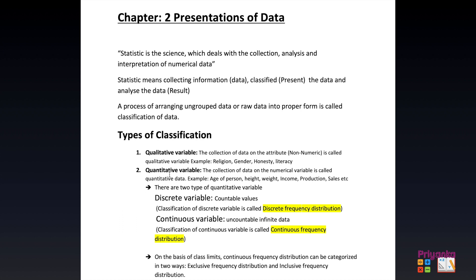A qualitative variable refers to the collection of data on attributes, meaning non-numerical data. Examples include religion, gender, honesty, and literacy — these are characteristics which cannot be counted in numbers.